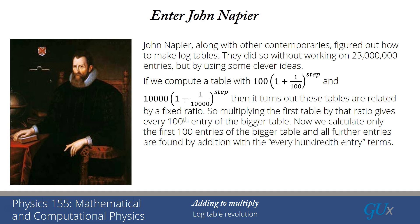So once he had that, he could then calculate the first hundred entries. He would first start by calculating the entries of the table generated with the hundreds. He would then multiply by this factor, and he would get every hundredth entry of the bigger table he was interested in. He would then only have to calculate the first hundred entries of the bigger table, and then all further entries would be found by addition with every hundredth entry that he had already determined.